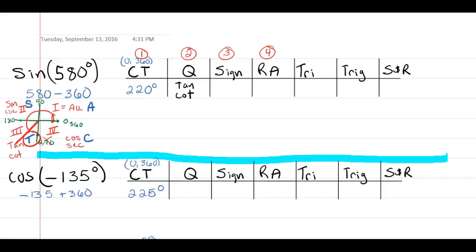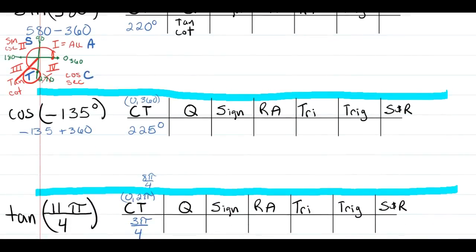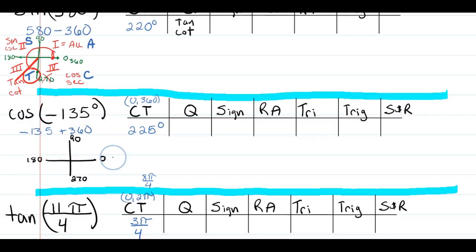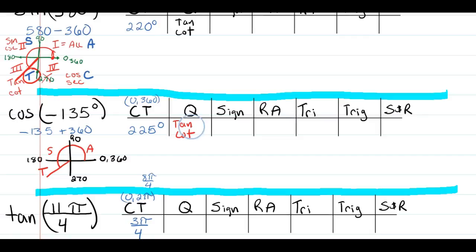For cosine of negative 135°, we have the coterminal angle 225°. Similarly, 225° is more than 0, more than 90, more than 180, but not more than 270 — so it's in quadrant 3, the tangent and cotangent quadrant. These are the two trig functions that will be positive in this quadrant.